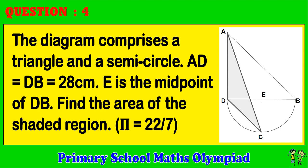Question 4. The diagram comprises a triangle and a semicircle. AD equals DB equals 28 centimeters. E is the midpoint of DB. Find the area of the shaded region. Pi equals 22 over 7.